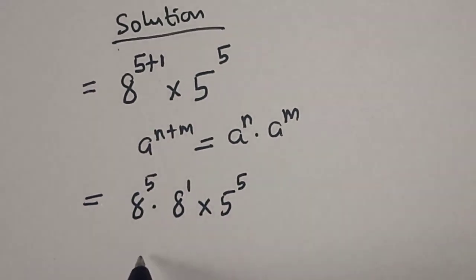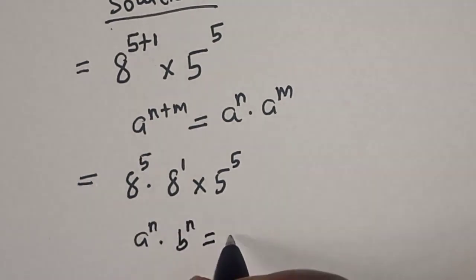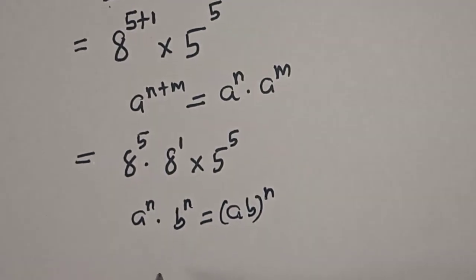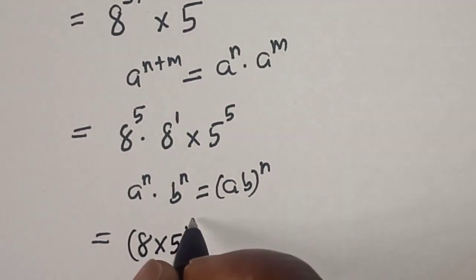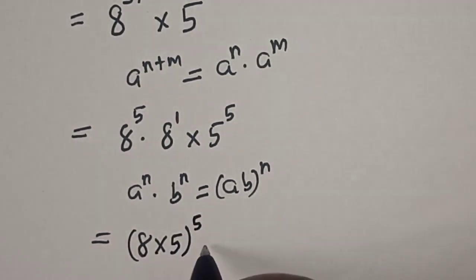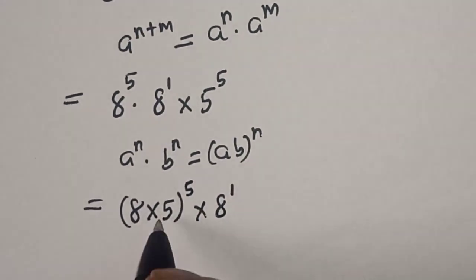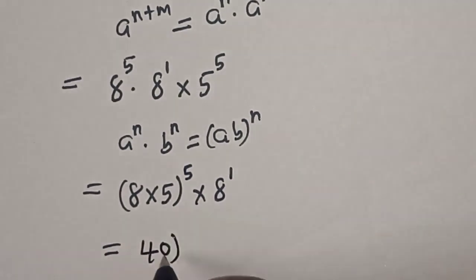Now we have power of 5 and also power of 5. If you have a raised to power n multiplied by b raised to power n, this is equal to ab to the power of n. So we have 8 multiplied by 5 to the power of 5, multiplied by 8 raised to power 1.